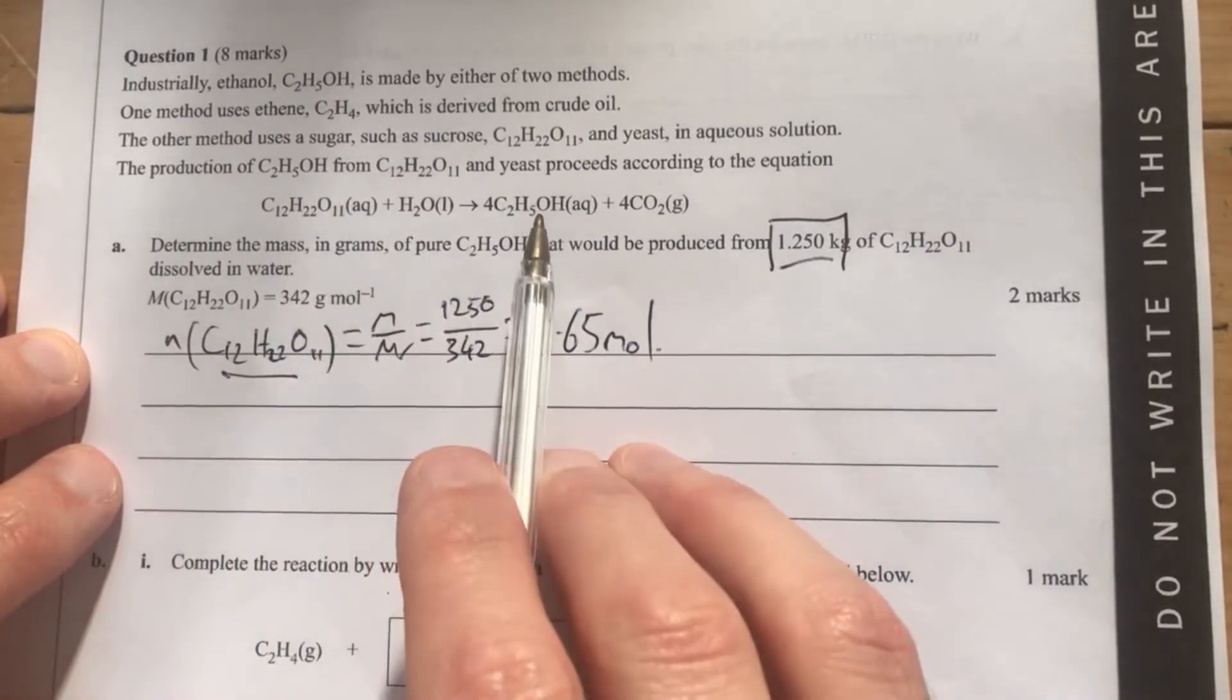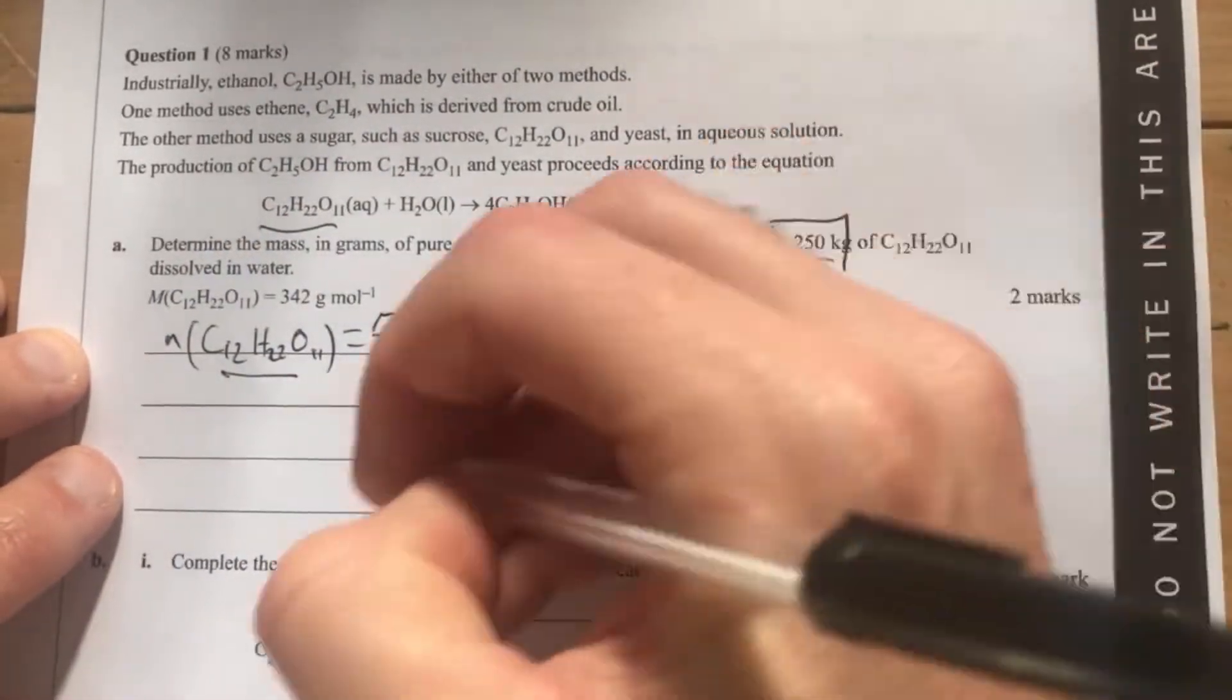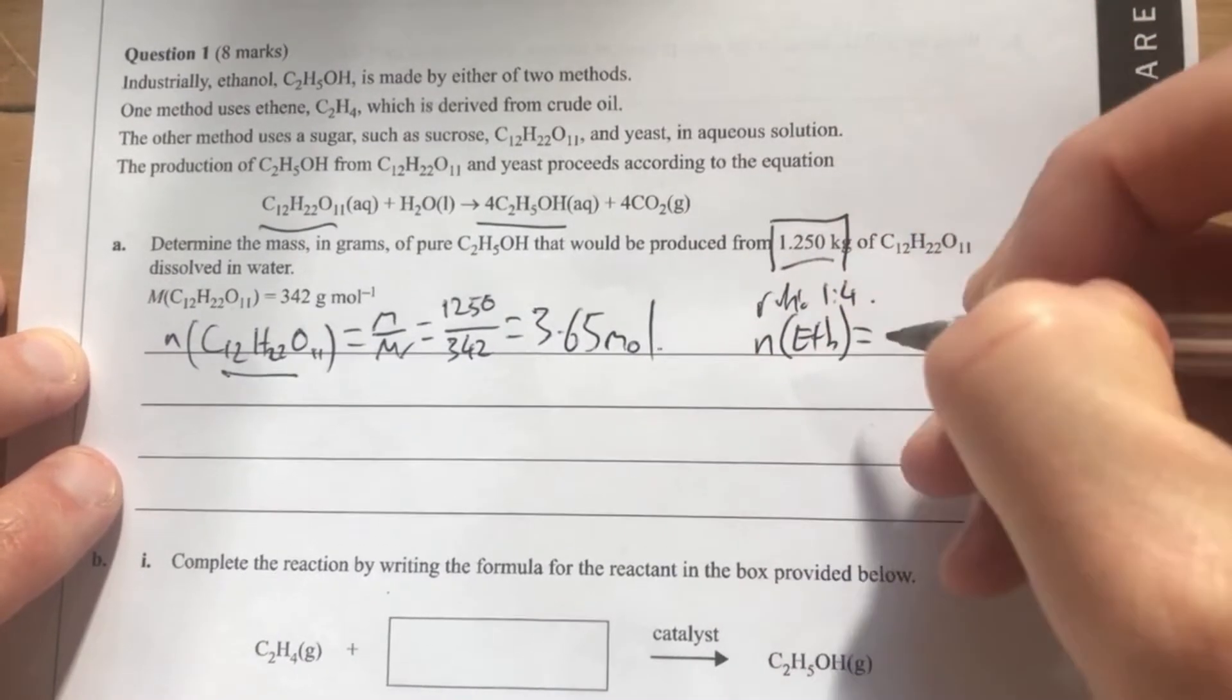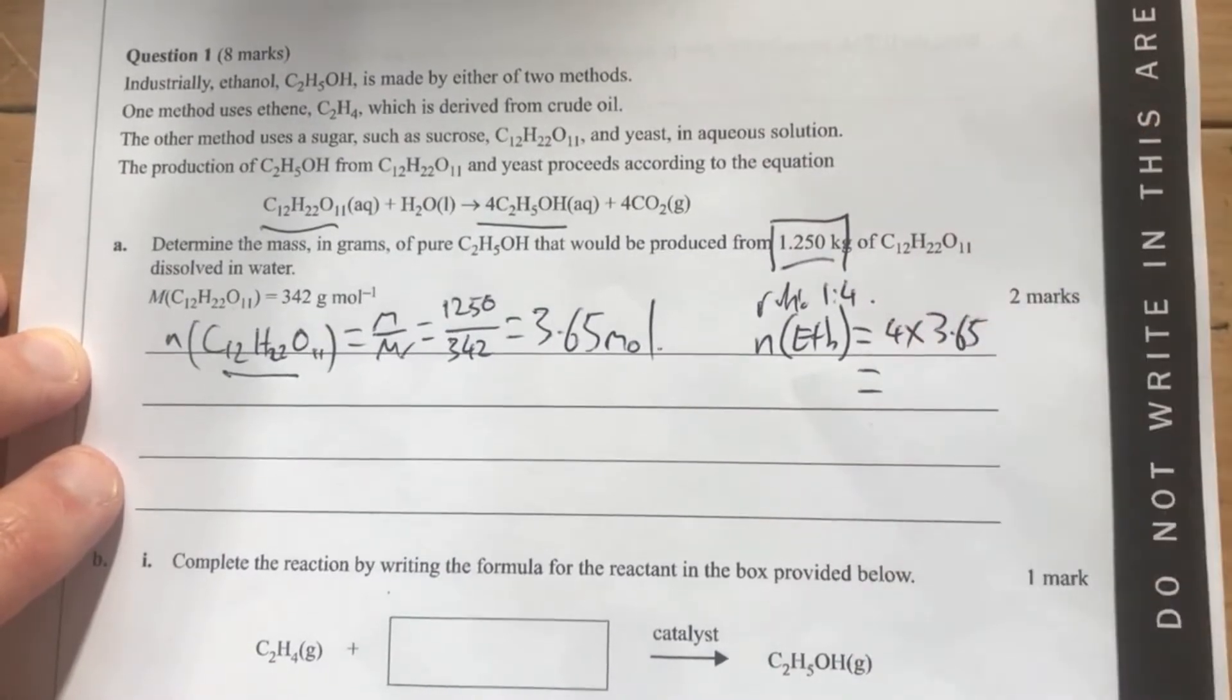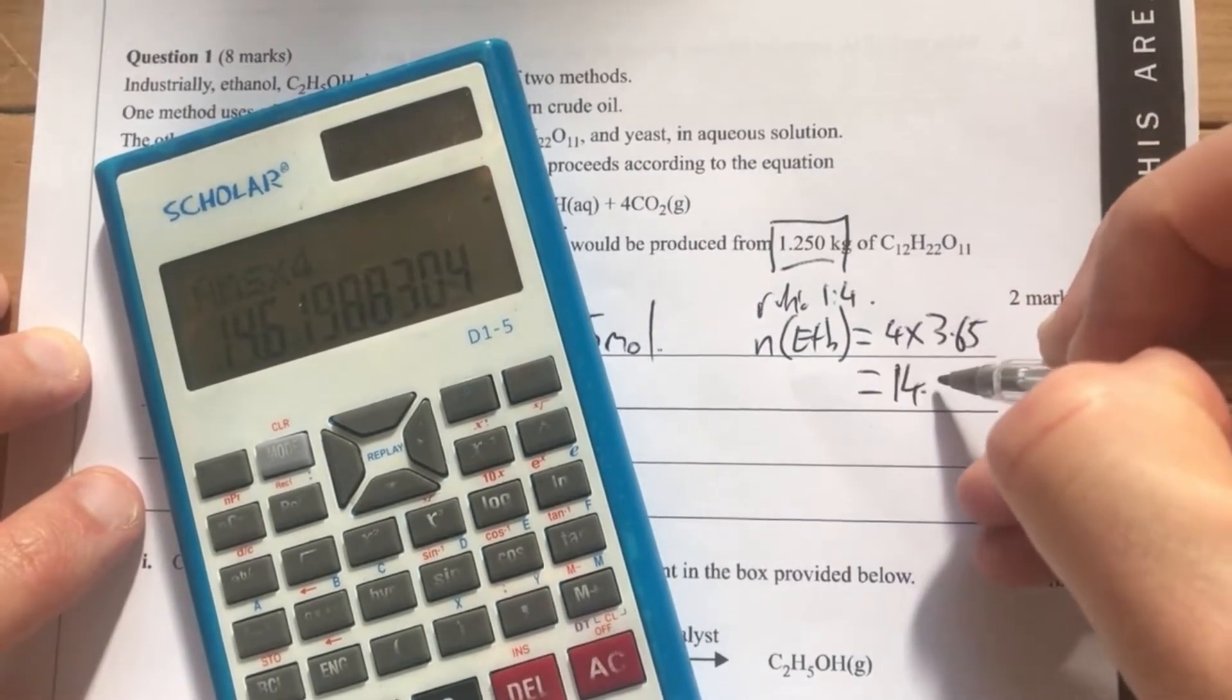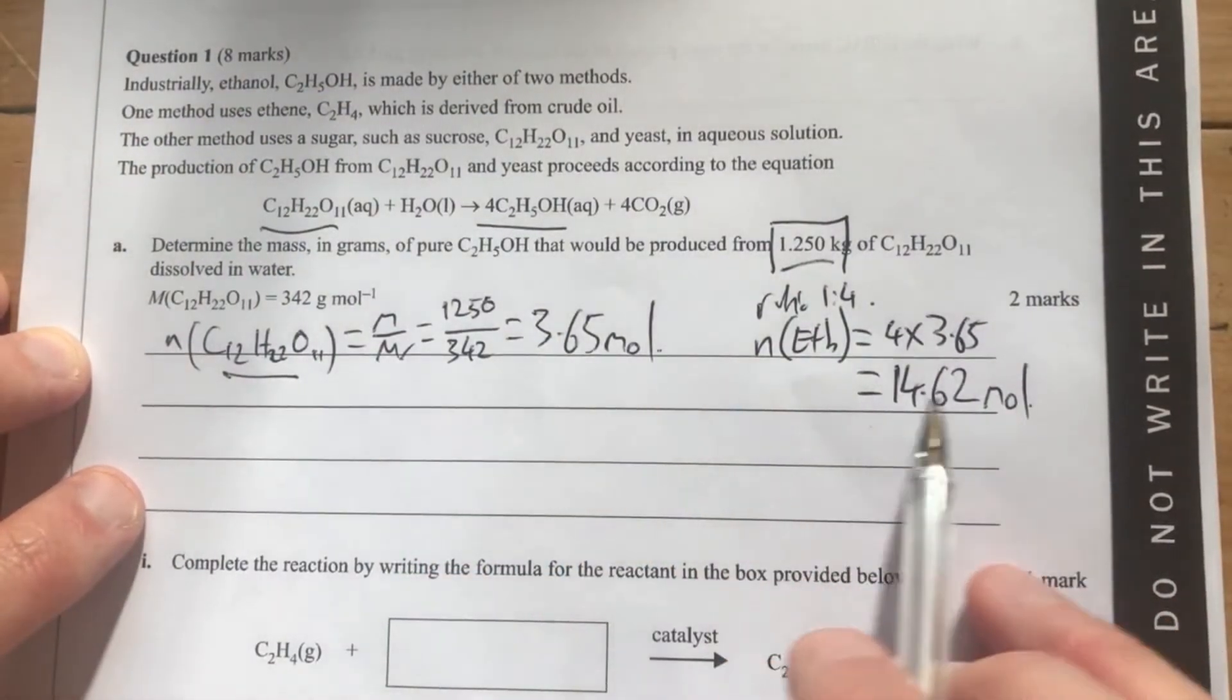I know I need to get across here using this equation, so I need a ratio. My ratio, as I can see here really clearly, is 1 to 4. So therefore my number of moles of ethanol equals 4 times 3.65. If I simply go in here, I'm going to times that by 4, which gives me 14.62 mole of ethanol.